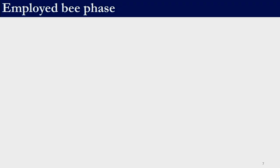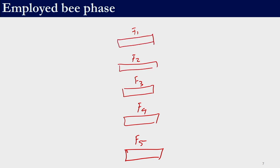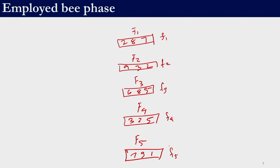Let's look at the employed bee phase. Suppose we have 5 food sources f1, f2, f3, f4, and f5 — these are our decision variables or population members. For a 3-variable problem, these are the solution vectors. Corresponding to each solution we have an objective function value, and based on that we can calculate the fitness value using the formula from the previous slide. Corresponding to each food source in the employed bee phase there are bees — employed bee 1 through 5.